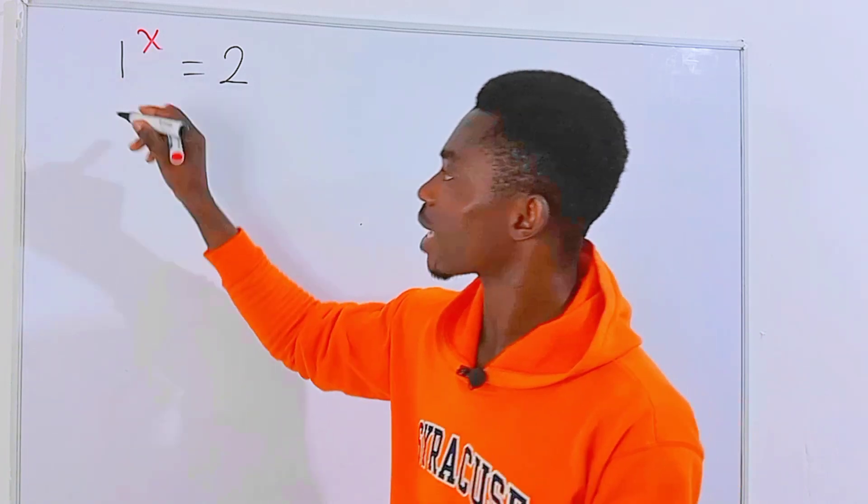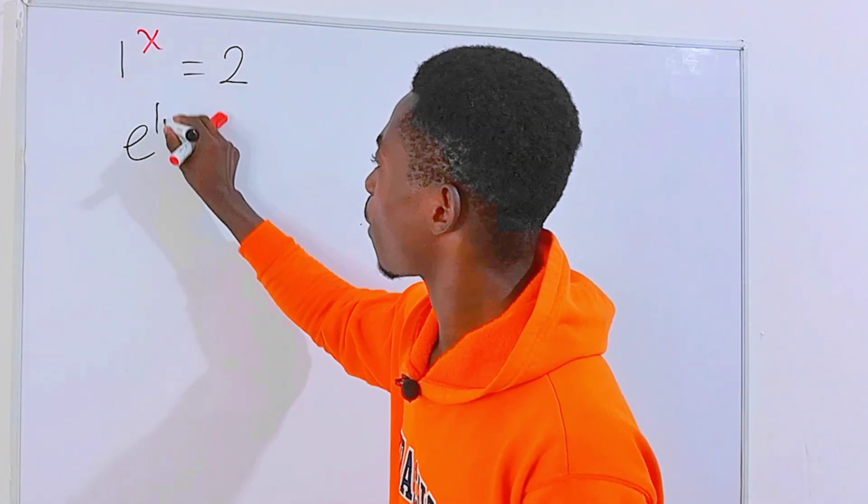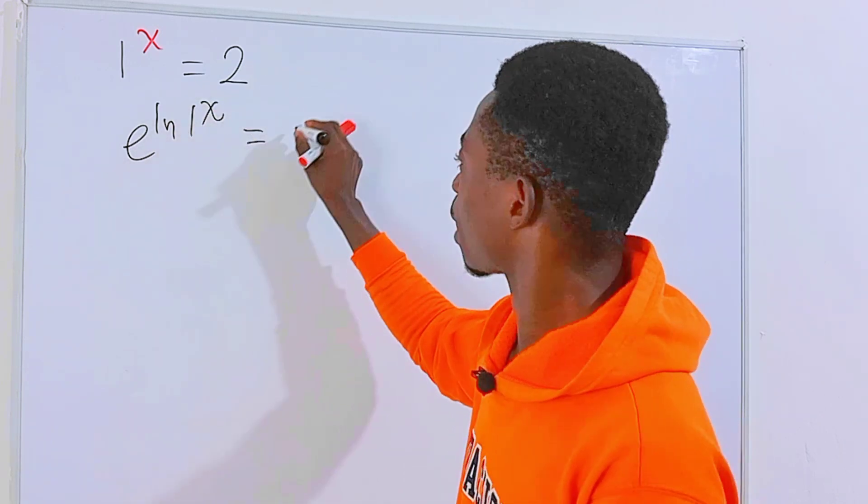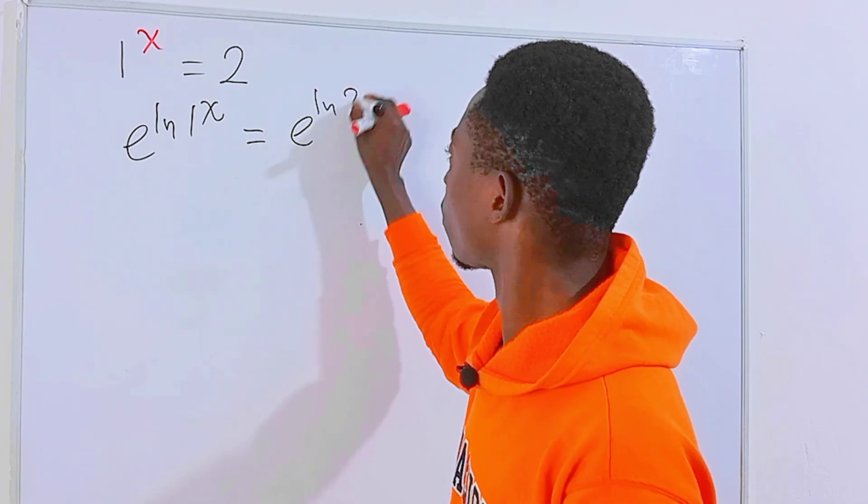We can rewrite 1 to the power x as e to the power ln of 1 to the power x, and this equals 2, which is the same as e to the power ln of 2.